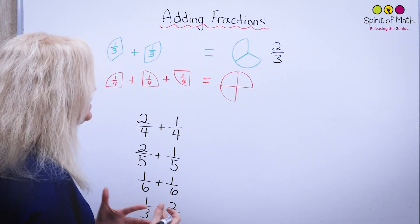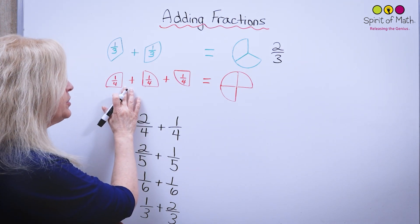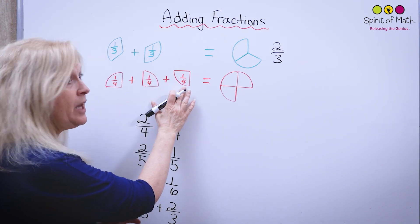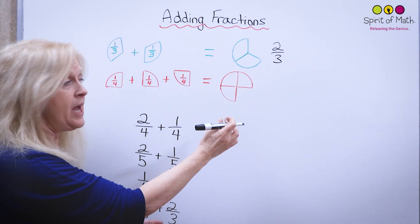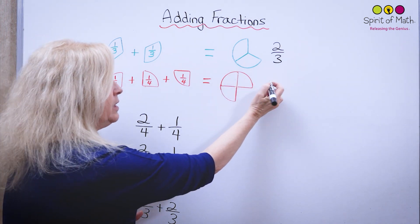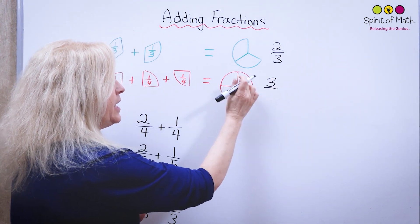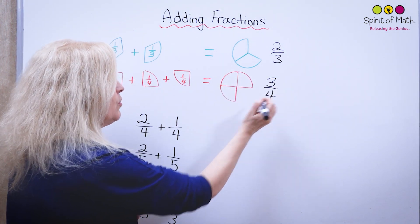Now let's look at another one. Let's say you have one quarter and you add another quarter and you add another quarter. When you put those all together, this is what it looks like. Basically you have one, two, three, and each one is a quarter, so three quarters.